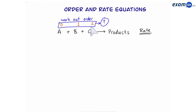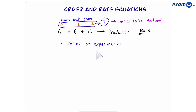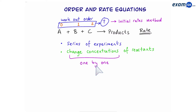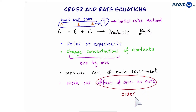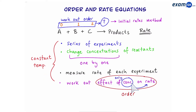How do we know the order of a reactant? To work out the order, one way is by using the initial rates method. This means we do a series of experiments involving the same reactants. However, each time we change the concentration of reactants one by one — for example, we double A and don't change B or C, or we triple A and don't change B or C, or we triple B and don't change A or C, and so on. Every time we do a reaction, we measure the rate of each experiment. Then from the data, we work out the effect of changing concentration on rate — in other words, we work out the order. When we do these series of experiments, make sure everything is done at the same constant temperature, so that only concentration is changing the rate and there are no other variables.